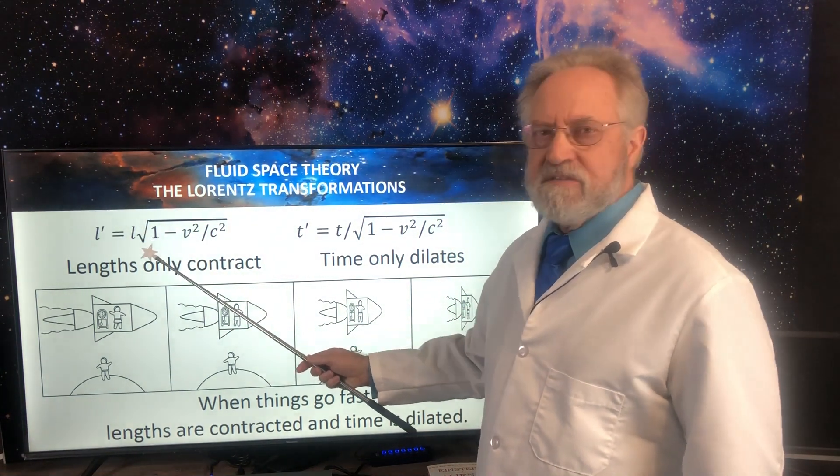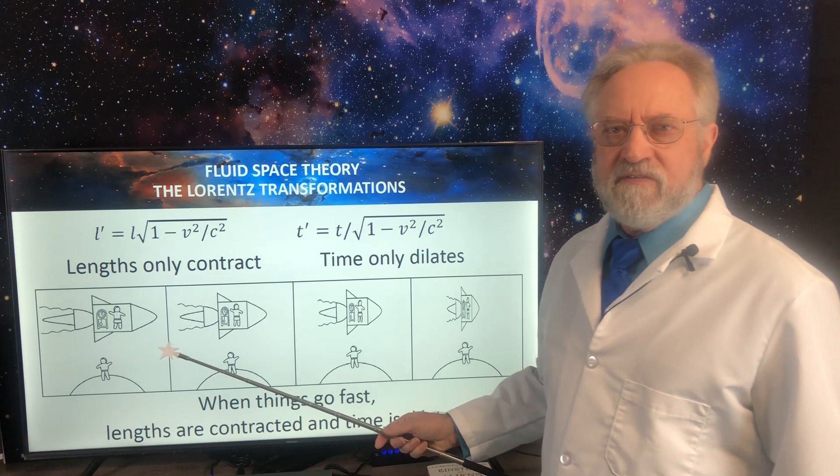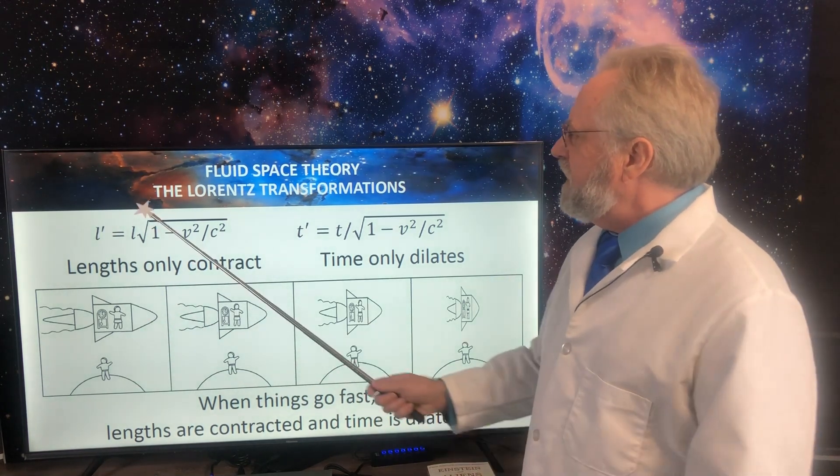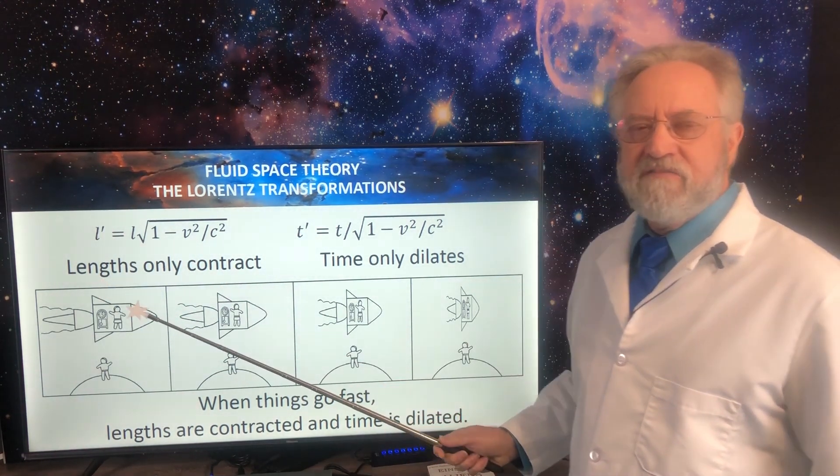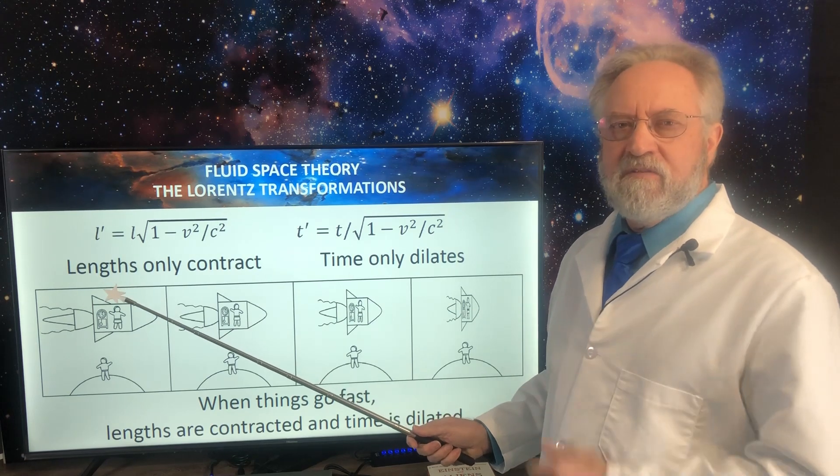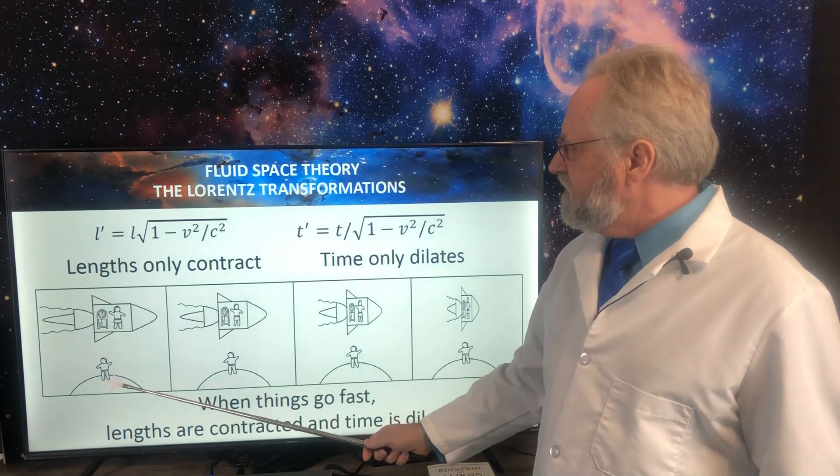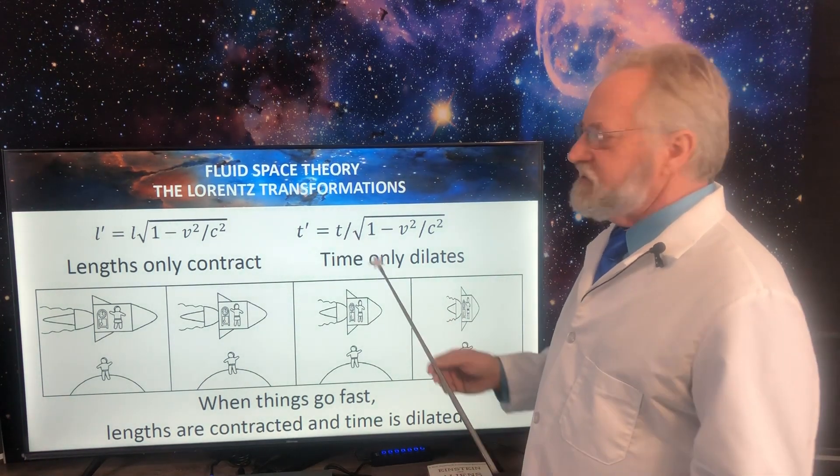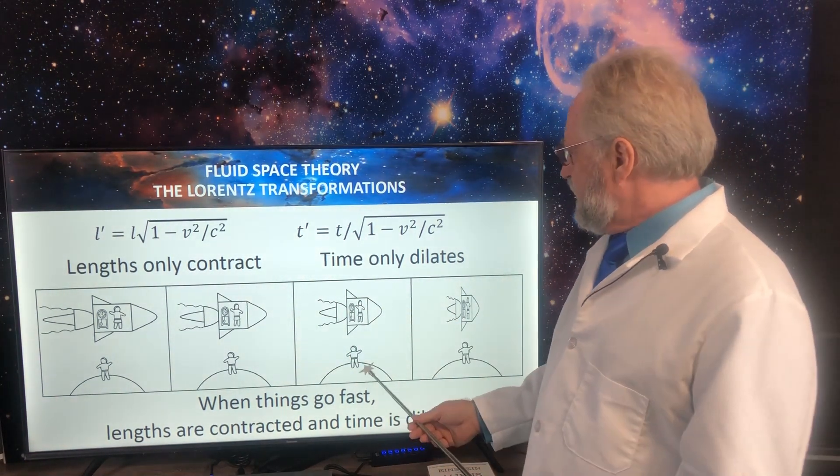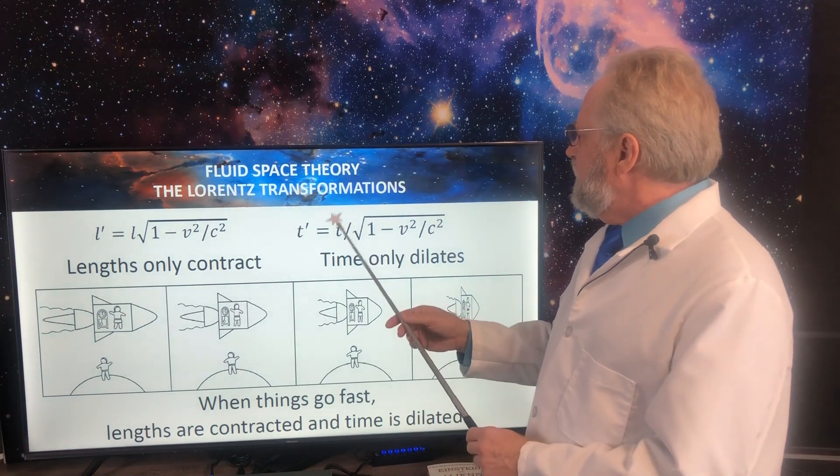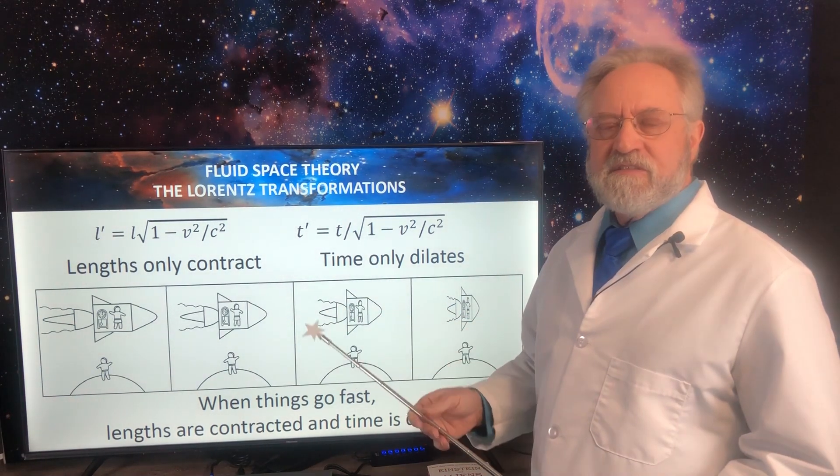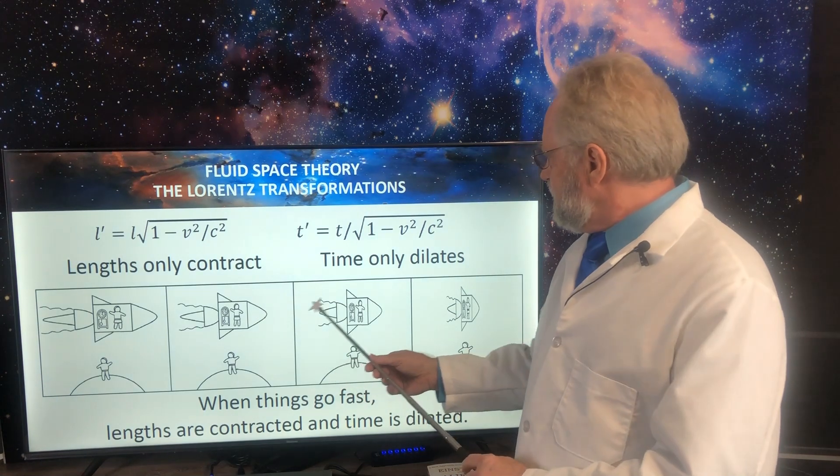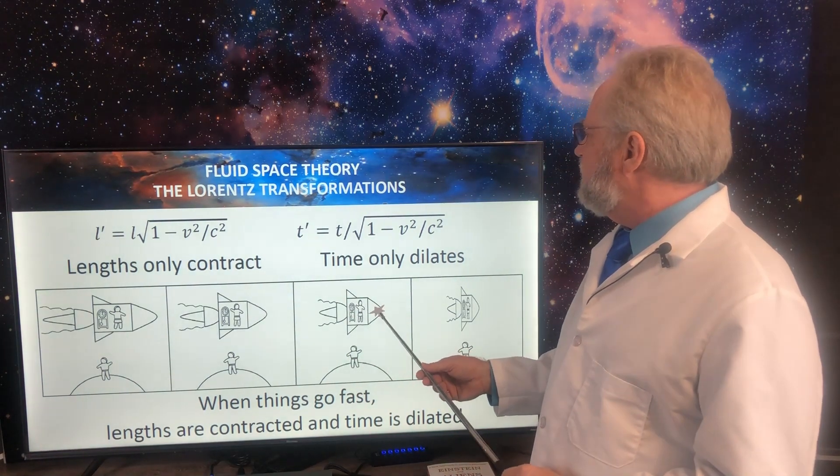The L represents the length in the stationary reference frame, and the L' represents the length of an object in the moving reference frame as viewed from the stationary reference frame. The same thing with time. T represents the length of a second for Stan on the asteroid, and T' represents the length of the second he sees on Ricky's ship as it flies past.